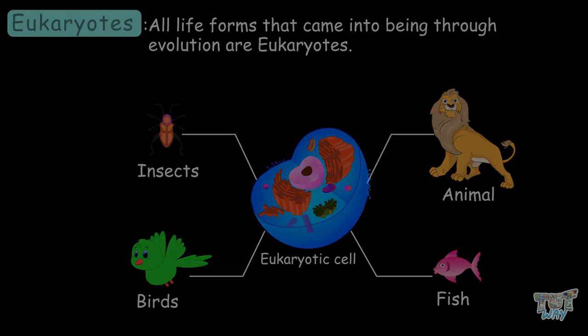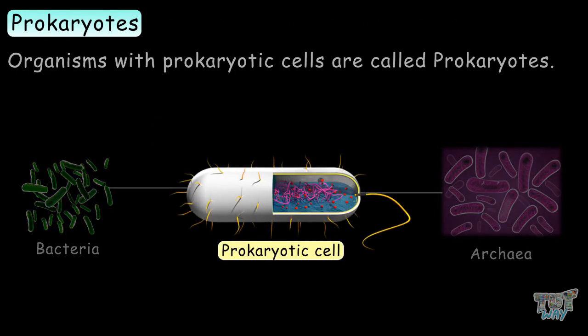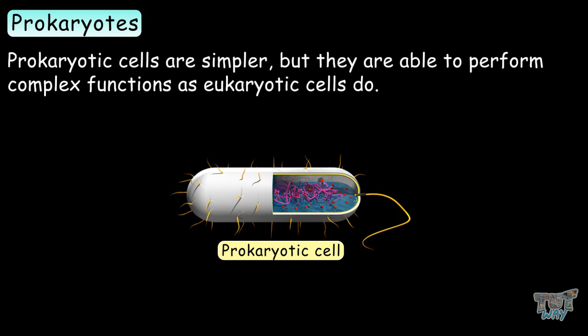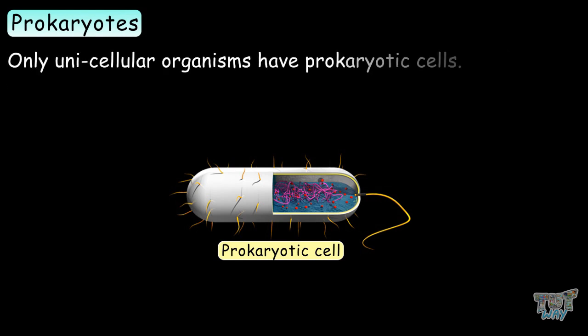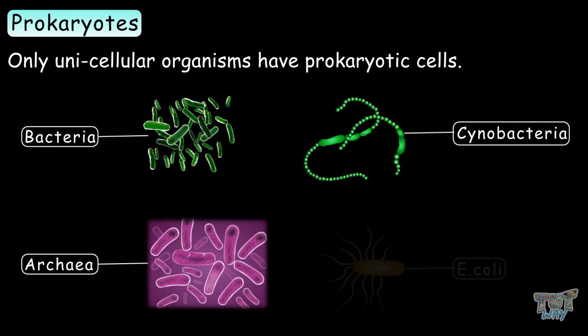Organisms with prokaryotic cells are called prokaryotes. Prokaryotes are always unicellular organisms. Prokaryotic cells are way simpler, but they are able to perform complex functions as eukaryotic cells do. Only unicellular organisms have prokaryotic cells. Examples are bacteria, archaea, cyanobacteria, and E. coli.